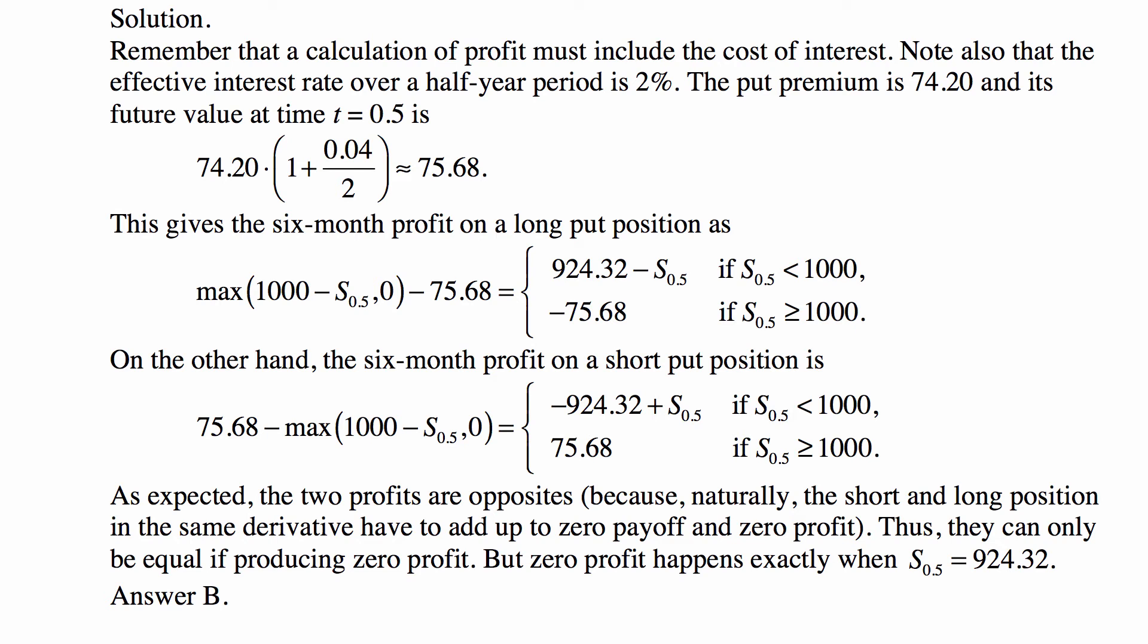Because short and long positions in the same derivative security together form a zero-sum game, they can only be equal if they produce zero profit. Two numbers that are opposites are equal if they're both zero. And zero profit happens exactly when S_0.5 equals 924.32.